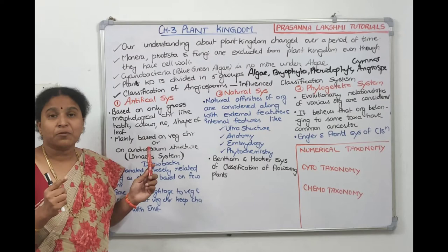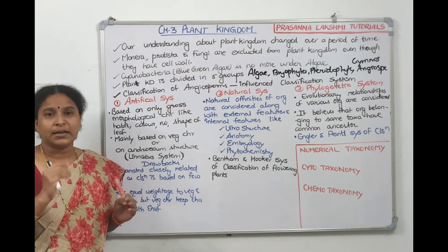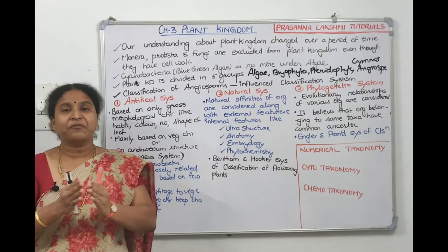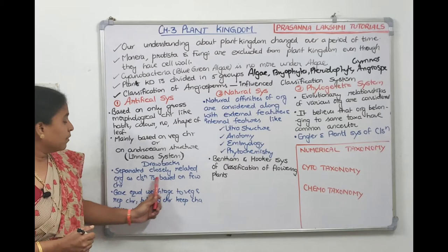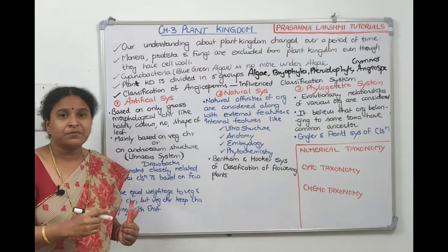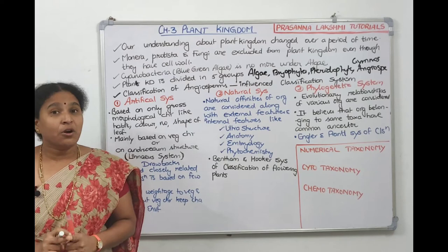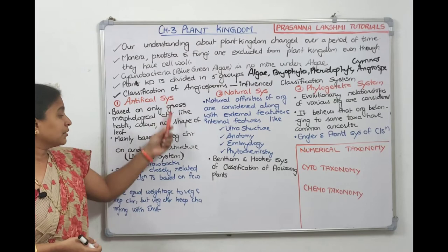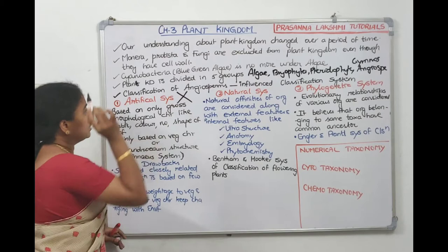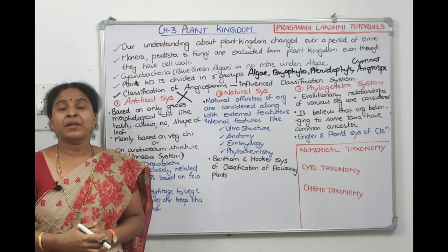Artificial classification failed because only few characters were considered, so closely related plants were kept far apart. Additionally, equal weightage was given to vegetative and reproductive characters, which is incorrect since vegetative characters change with environmental conditions while reproductive characters are stable and pass to the next generation.